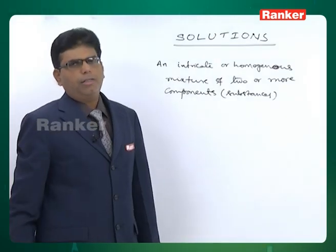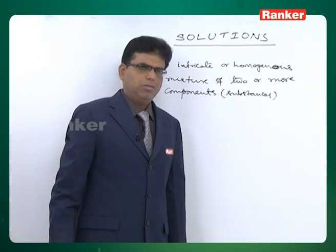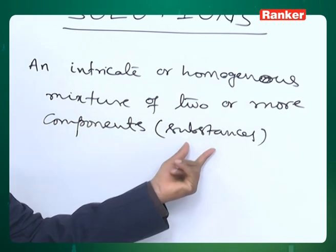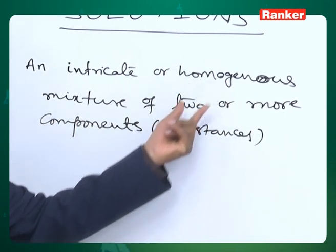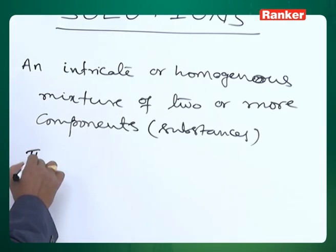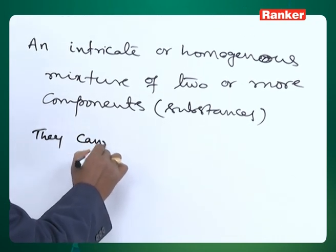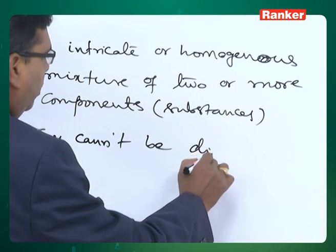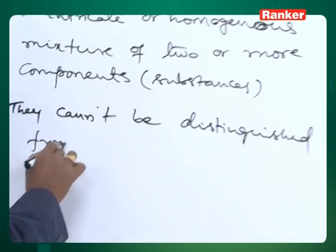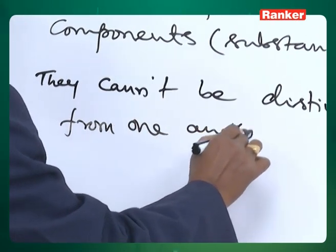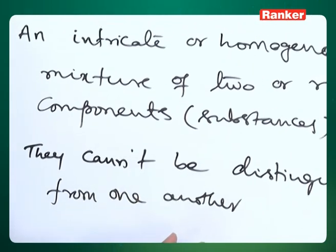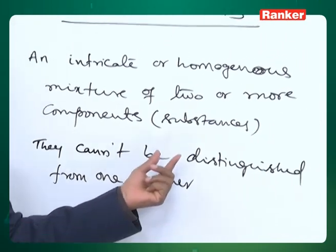A homogeneous mixture means the two substances we are mixing will completely mix with one another, and once they are mixed they cannot be distinguished from one another. Once a solution is formed, the two components that were mixed cannot be distinguished.